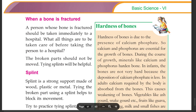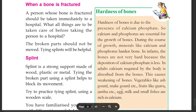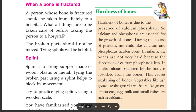This causes weakening of bones. Vegetables like ash gourd and snake gourd, fruits like guava and jambu, as well as eggs, milk, and small fishes are rich in calcium.